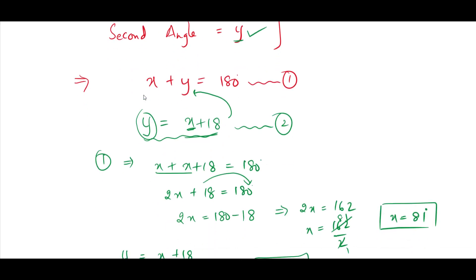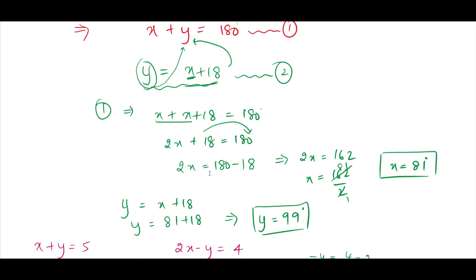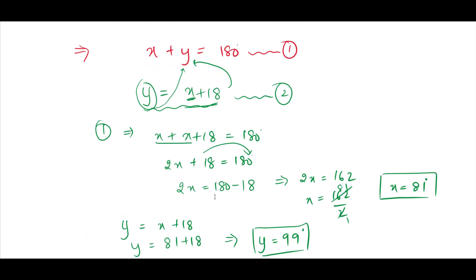The larger angle y equals x plus 18. Substituting this value into equation 1, we get x plus x plus 18 equals 180 degrees. Shift 18 to the RHS — it becomes 2x equals 162. So x equals 81 degrees, and we get y as 99 degrees.